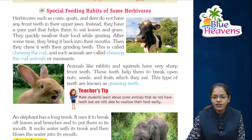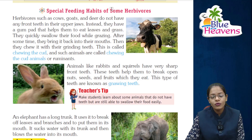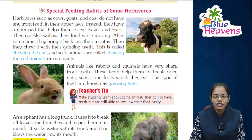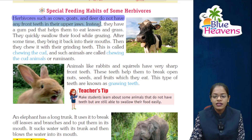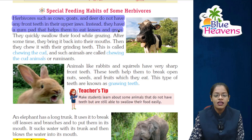Let's read the next topic: special feeding habits of some herbivores. Herbivores such as cows, goats, and deer do not have any front teeth in their upper jaw. Instead, they have a gum pad that helps them to eat leaves and grass. Herbivores quickly swallow their food while grazing.